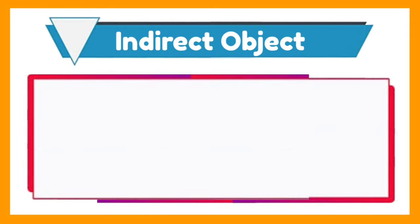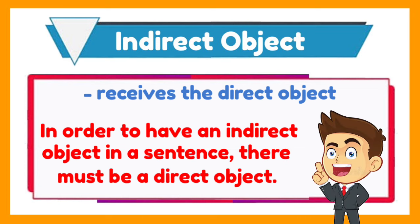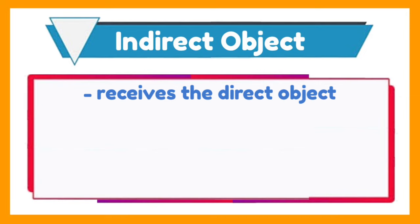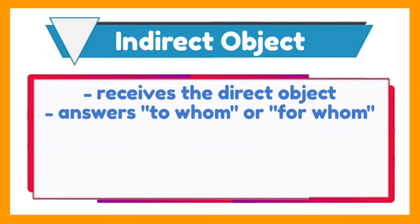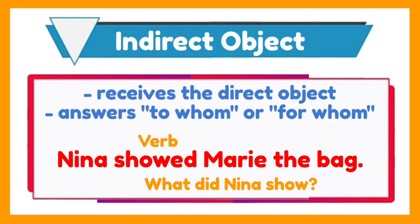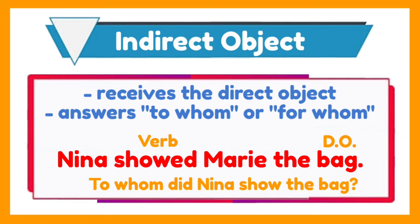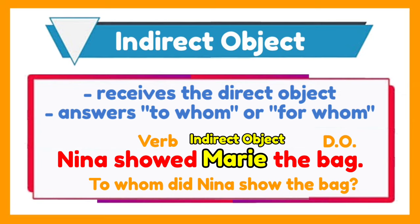Now let us have the indirect object. An indirect object is a word that receives the direct object. Therefore, in order to have an indirect object in a sentence, there must be a direct object. An indirect object answers the question to whom or for whom. For example, Nina showed Marie the bag. The verb is showed. The direct object is the bag — what did Nina show? And to whom did Nina show the bag? To Marie. So Marie is the indirect object in the sentence.